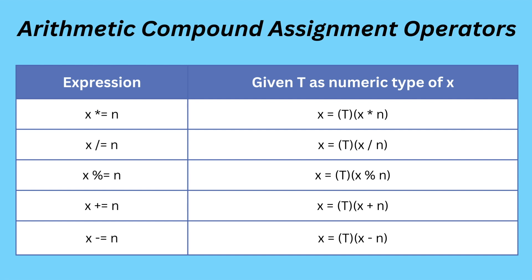Arithmetic compound assignment operators are used to simply provide a shorter syntax for assigning the result of an arithmetic operator. As you can see in the table, I have written the expression which is equivalent to the longer syntax, and we will understand them with the help of the program.